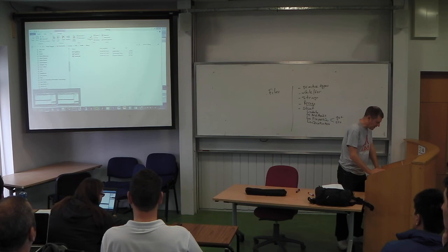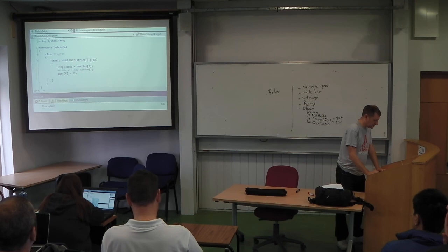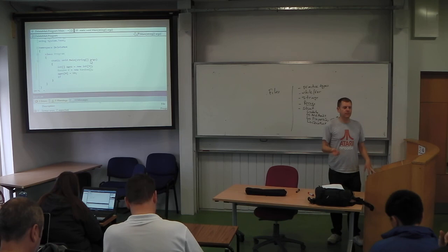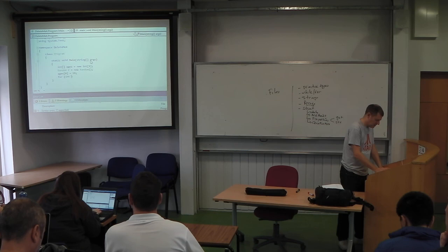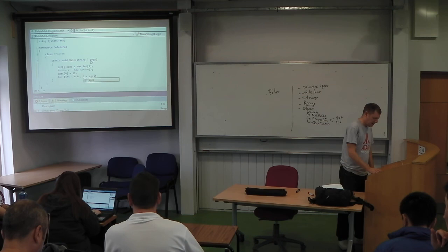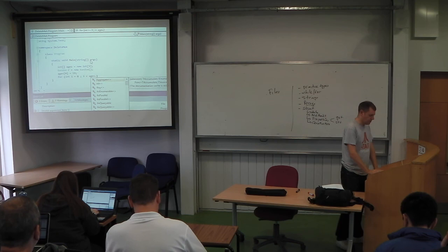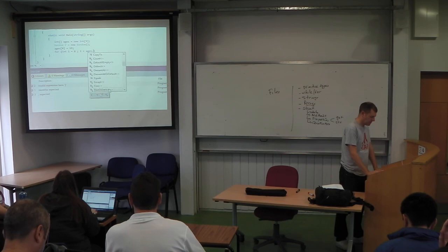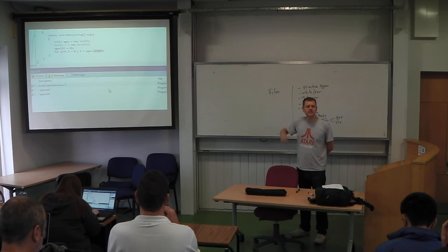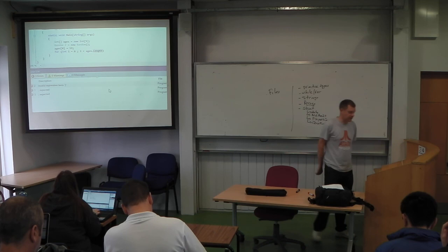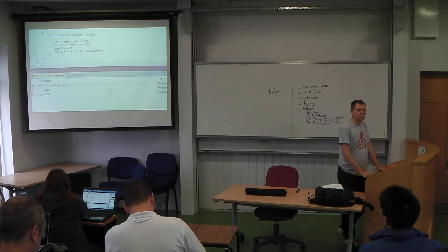In C#, you can query the array — you can ask it what its length is. When you press dot after the array name, Visual Studio brings up all the things that array can do: aggregate, all, any, and so on. If you scroll down you'll find `Length`. The length in C# is what's called a property — you don't put brackets at the end of it. It looks like a variable but it's not; it's a property. You can go `ages.Length` to get the length of the array.